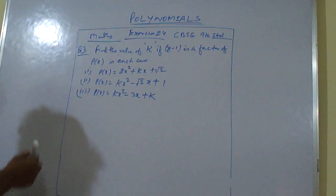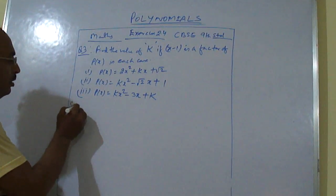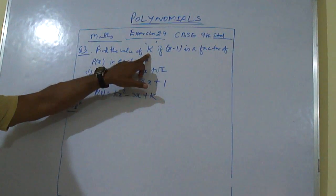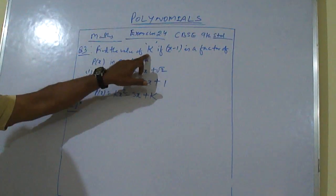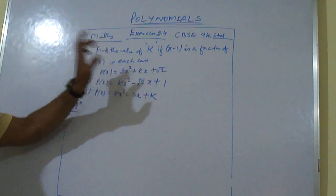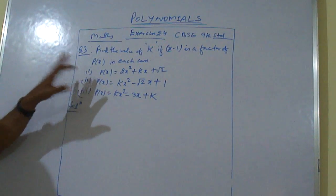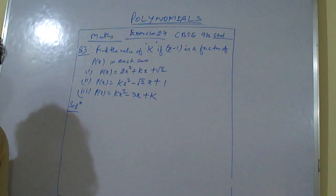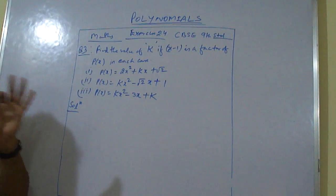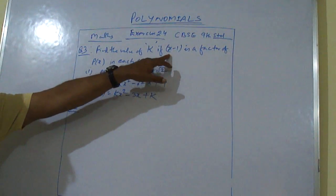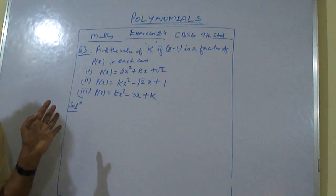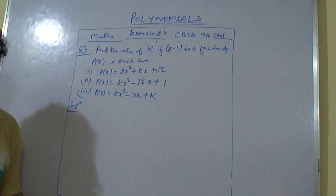In this question it is saying: find the value of k if x minus 1 is a factor of p(x) in each case. It is already given that x minus 1 is a factor. It means when we are putting x equal to 1 in p(x), it will become 0. It is already given that it is a factor, so it will become 0.